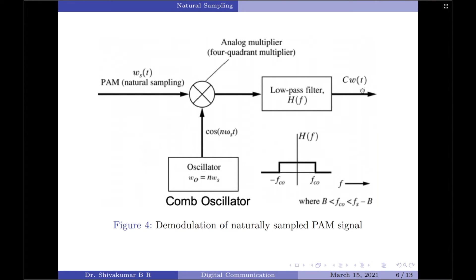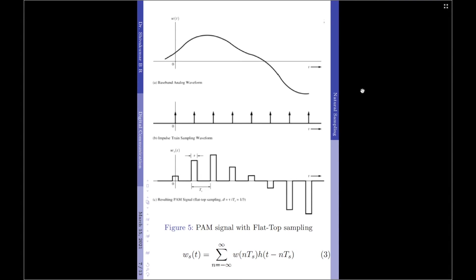Finally, we move on to the third technique of PAM signal generation, that is using the flat top sampling process. For flat top sampling, we perform instantaneous sampling of the original signal and then extend the samples to a width of capital T. It is very important to note that when performing instantaneous sampling, we must maintain a minimum width between each sample given by the sampling interval T_s. The original signal W(t) is instantaneously sampled and then the width of each pulse is extended to capital T, which is the width of the rectangular pulse.